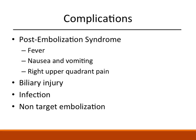Biliary injury occurs in about 8% of cases and is typically clinically silent. Infection occurs in 4% of patients, most commonly in patients with portal vein obstruction, biliary obstruction, presence of ascites, and biliary enteric anastomosis. Finally, non-target embolization can occur. This can cause gallbladder or splenic ischemia or infarction, or acute pancreatitis.